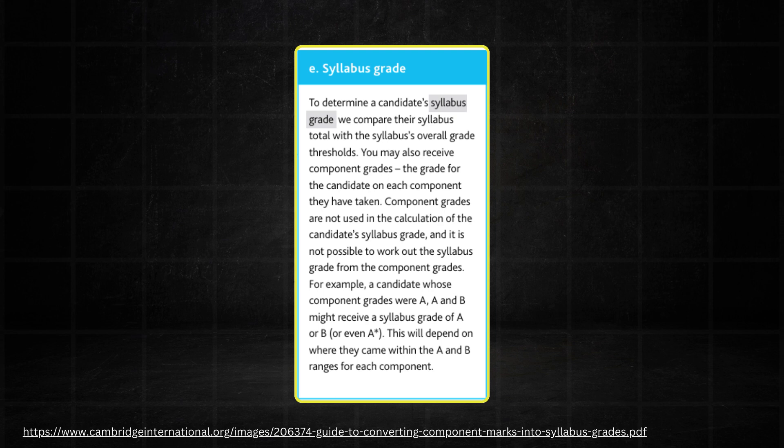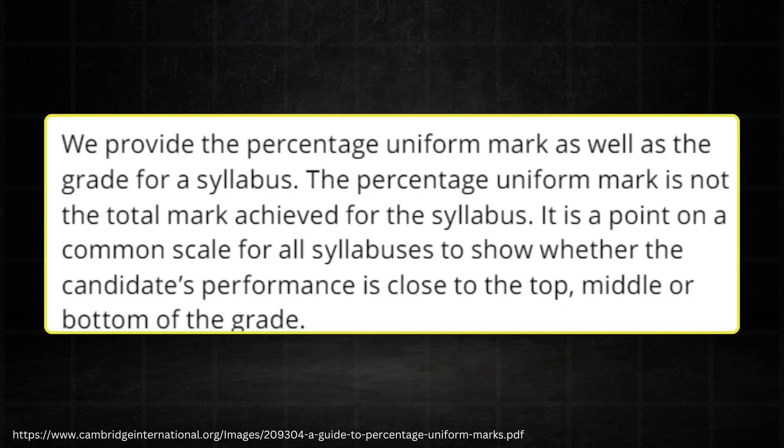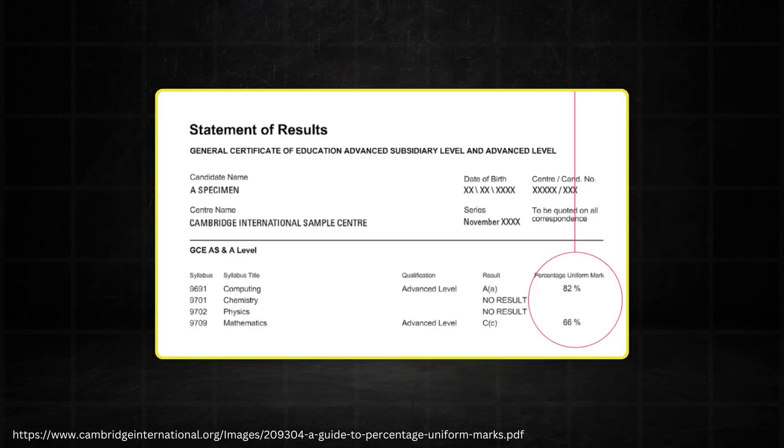This syllabus total is then compared to the grade thresholds, and from there you get your symbol and your percentage uniform mark, abbreviated PUM, which is the percentage you see on your result slip. To most of you, this probably doesn't make any sense at all, so let's look at an actual example using actual marks.